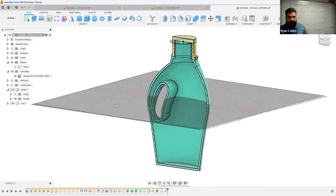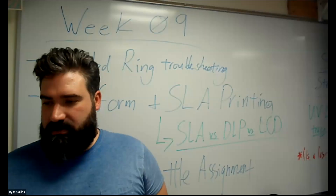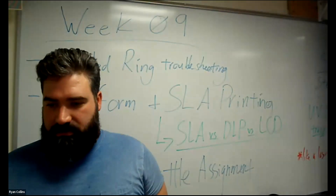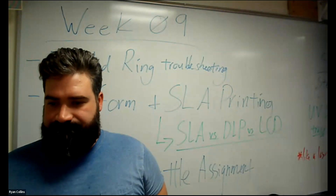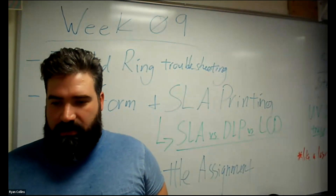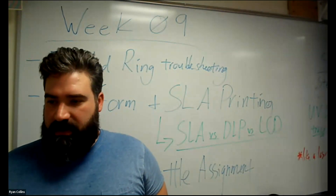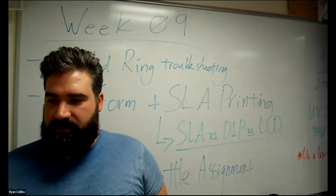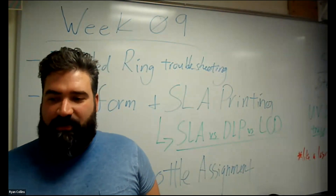Easy way to make a more amorphous bottle or form — using the shell tool to hollow it out, using extrudes or split body to make an integrated handle. We're going to experiment with this more in the future, so play around with it and let me know if I can help.